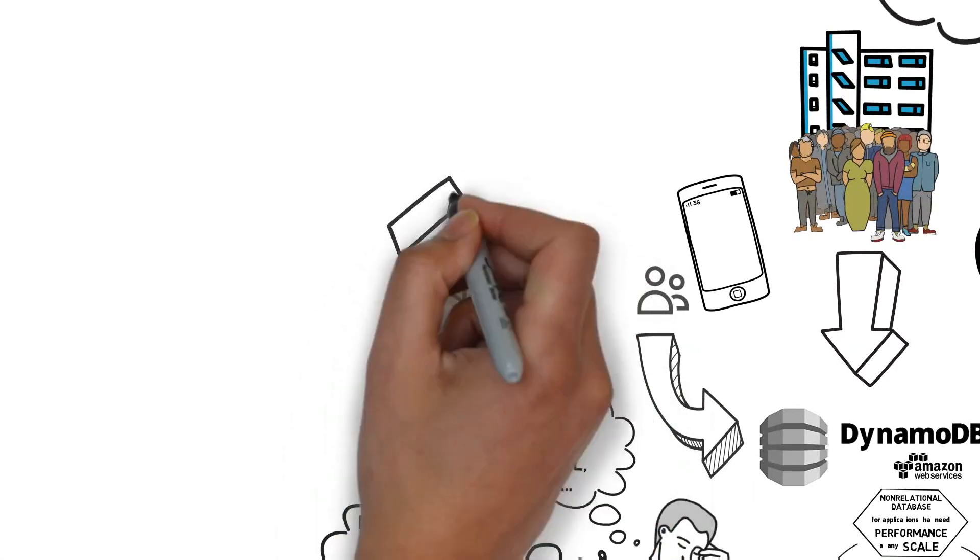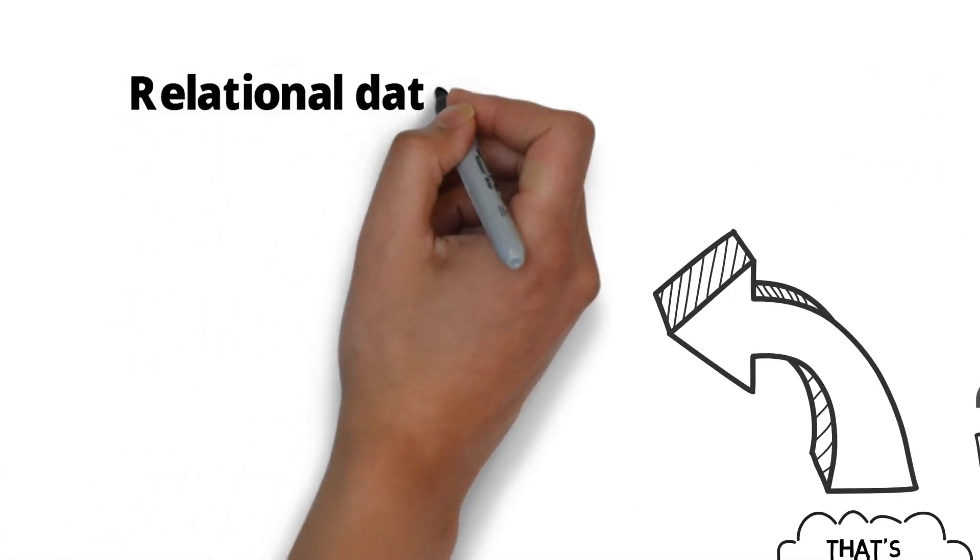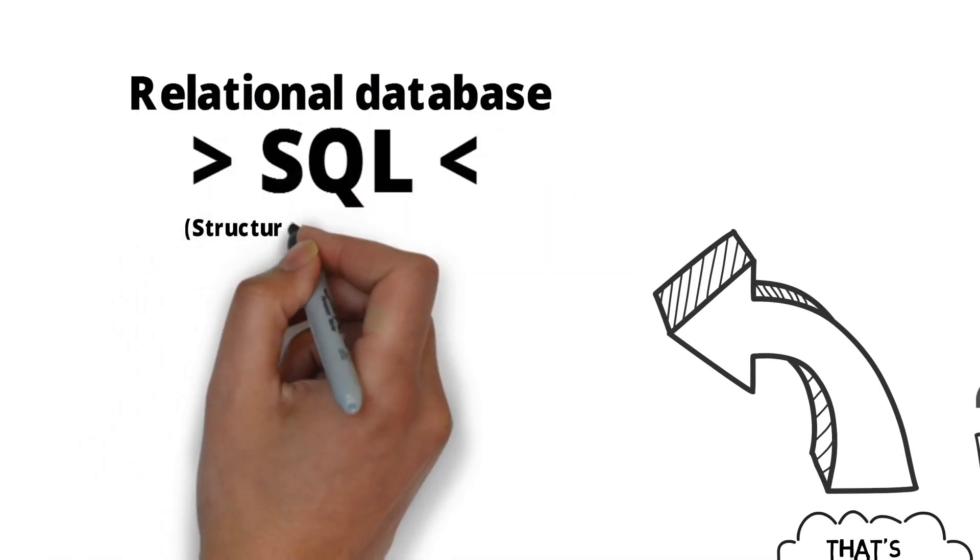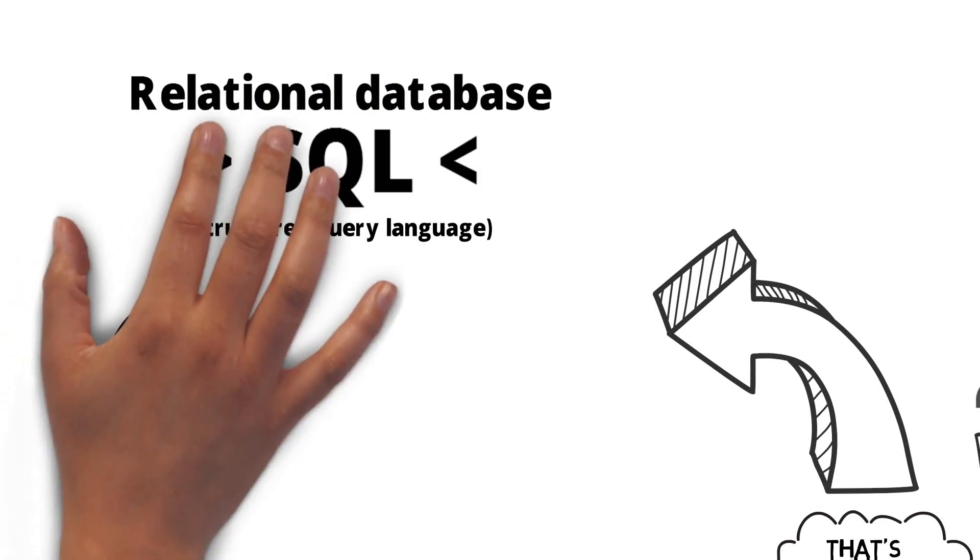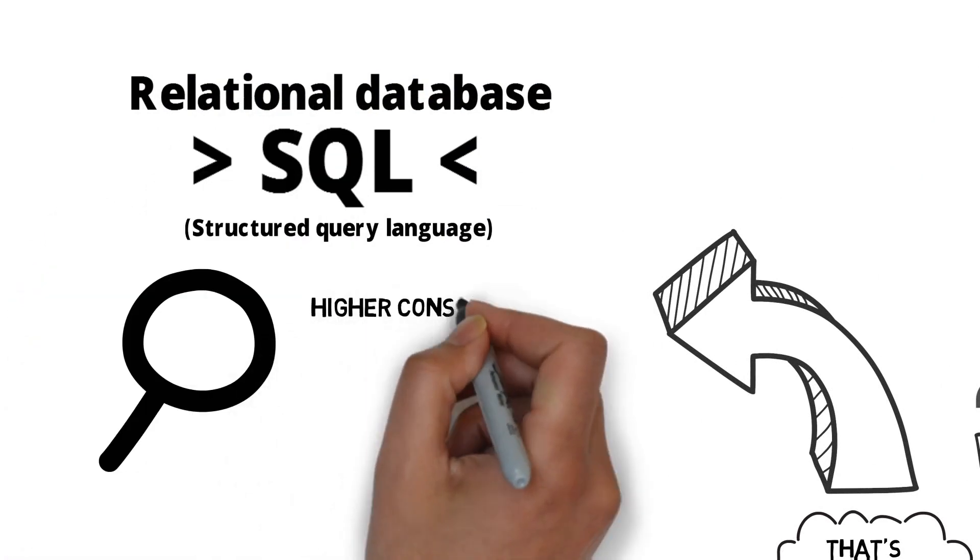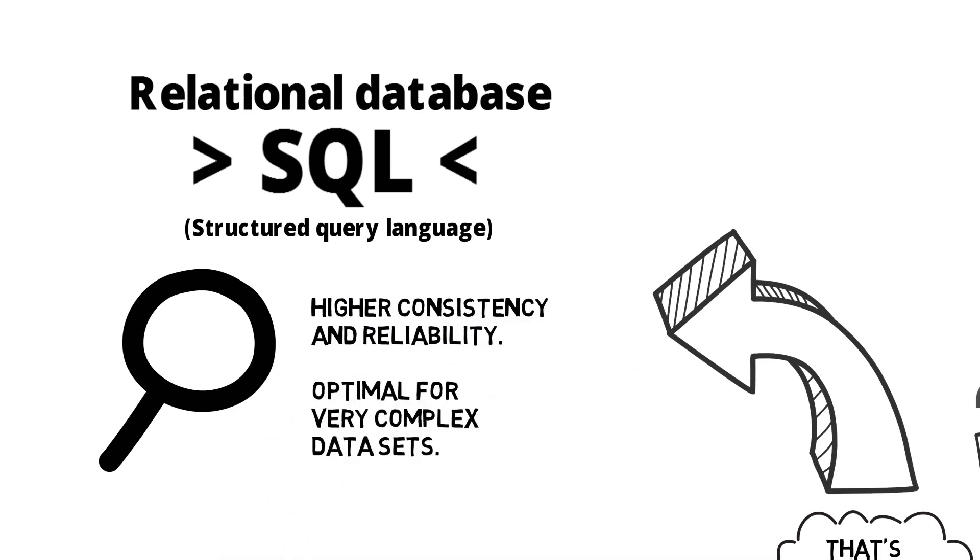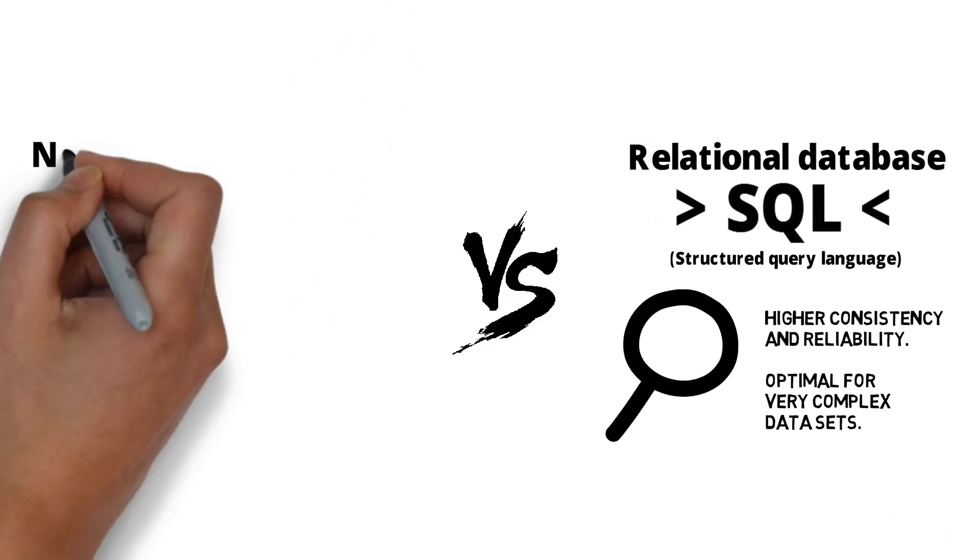A relational database uses structured query language, known as SQL. The benefits of a relational database is it provides higher consistency and reliability, plus it is optimal for very large, complex data sets.